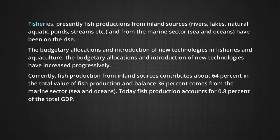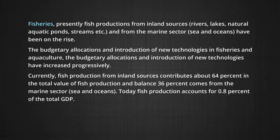Today, fish production accounts for 0.8% of the total GDP. In India, West Bengal, Andhra Pradesh, Kerala, Gujarat, Maharashtra, and Tamil Nadu are major fish-producing states. A large section of fishing families is poor. Unemployment, low per capita earnings, absence of mobility of labor to other sectors, and high rates of illiteracy and indebtedness are some of the major problems which the fishing community faces today.